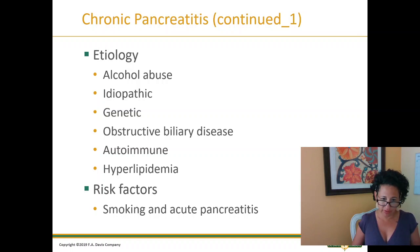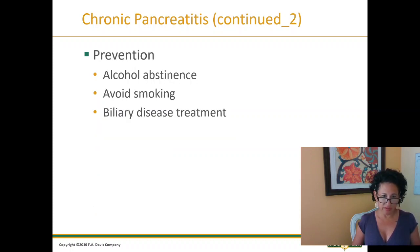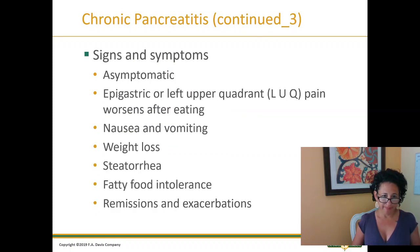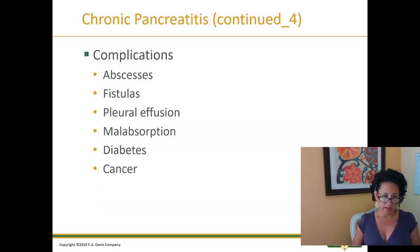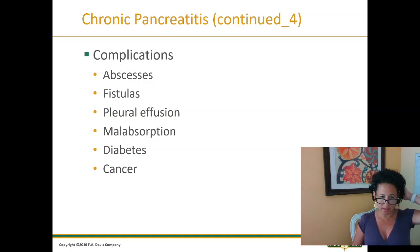Risk factors always include smoking and alcohol. Prevention is important. It can be asymptomatic or progress to epigastric pain, nausea, vomiting, and weight loss among other signs and symptoms. Some patients may have none, some may have all. Complications include abscess, fistulas, and pleural effusions.